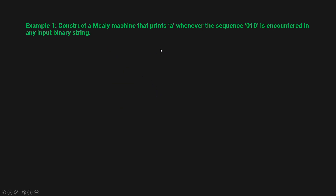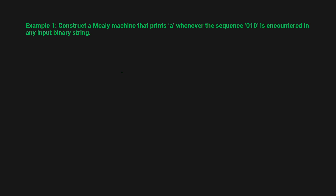Now let's look at the next example: construct a Mealy machine that prints 'A' whenever the sequence 0 1 0 is encountered in any input binary string. What we'll do is first construct the basic DFA that accepts the string 0 1 0. Starting in state A, on input 0 you go to state B, then on input 1 you go to state C, and in state C on input 0 you go to state D. Only when we reach state D — that is, after seeing 0 1 0 — will we print 'A'; everywhere else we print 'B'.